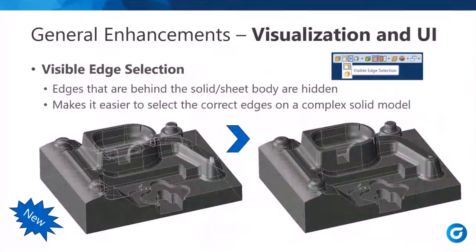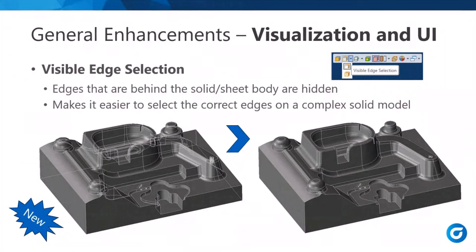There are a couple of visualization enhancements. The first is Visible Edge Selection. Edges that are behind the solid or sheet body are hidden. On a complex model, you'd normally see all edges even behind your view, which gets busy and hard to look at. With visible edge selection active, it's much cleaner and easier to look at. This is a great new feature.